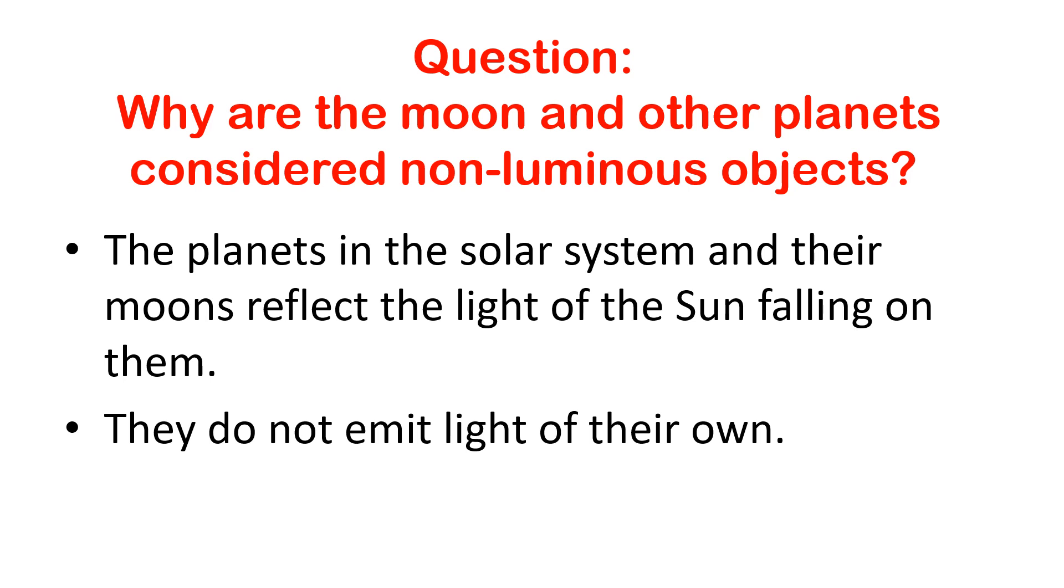Now the question will come in your mind. Why are the moon and the other planets considered non-luminous objects? Because the planets in the solar system and their moons reflect the light of the sun falling on them. They do not emit light of their own.